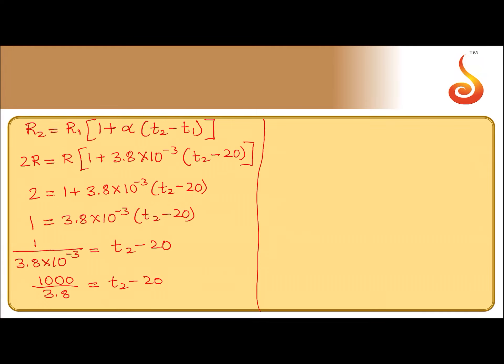Now, calculating 1000 divided by 3.8 gives 263.15 equals T2 - 20.